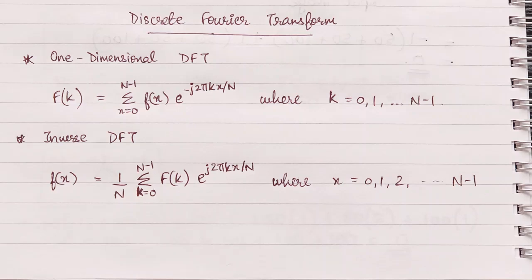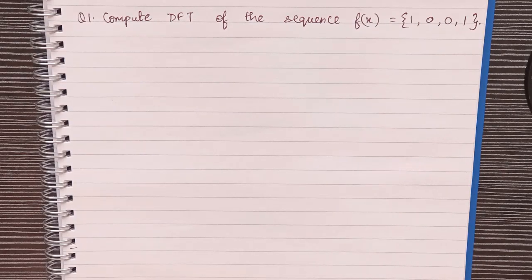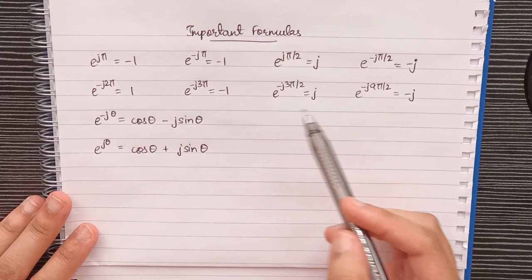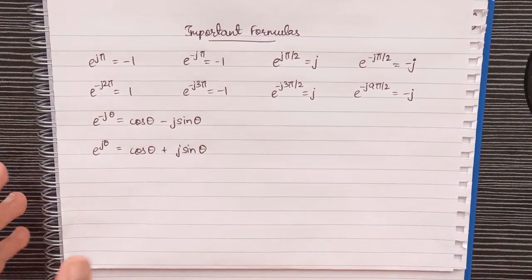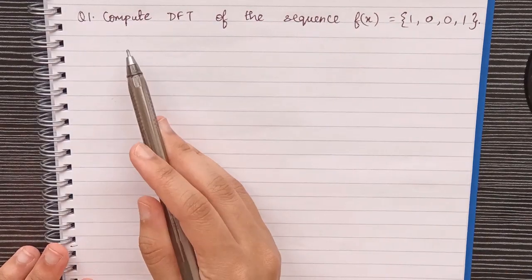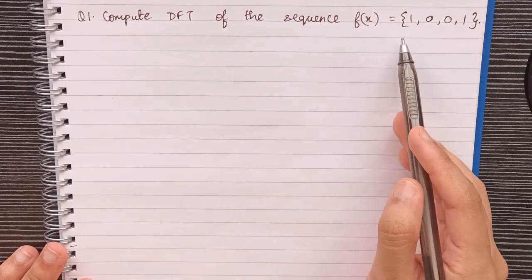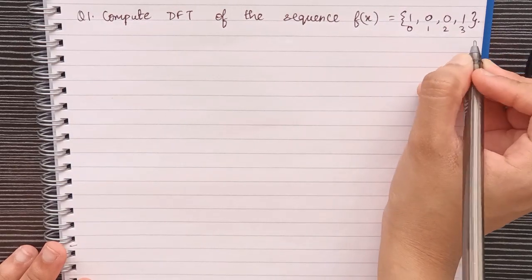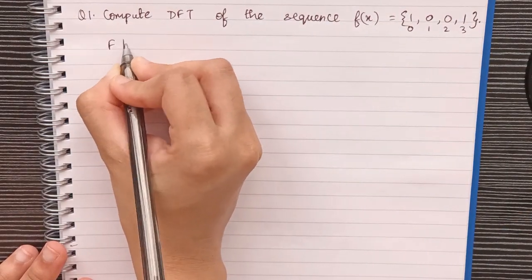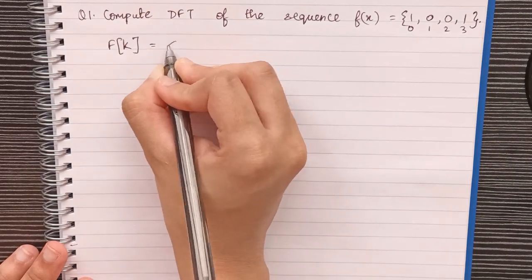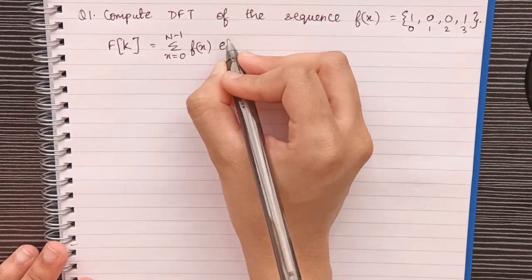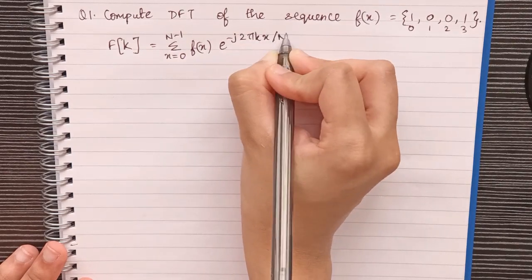So we will look at a question now. Before we start with the question, I will show you a list of already calculated values and important formulas. These will come in handy when we do the question. The question is: compute DFT of the sequence f(x) = {1, 0, 0, 1}. What we will do is write down the indices, which are 0, 1, 2, 3. Now we will write down the DFT formula: F(k) = Σ (x=0 to N-1) f(x) · e^(−j2πkx/N).